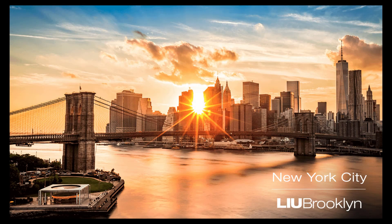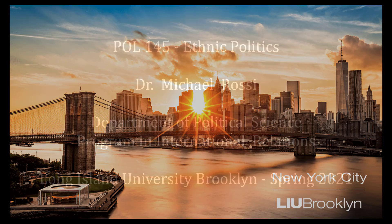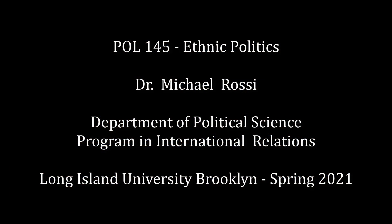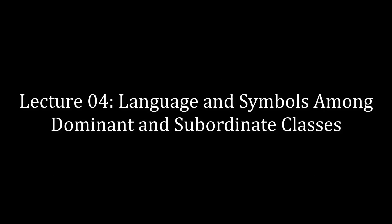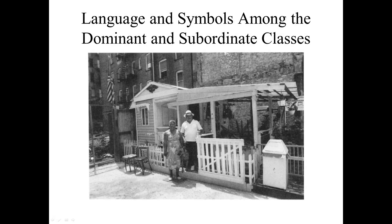Welcome back to Ethnic Politics. This week is only one lecture, but it's a good one. We are looking at the relationship between language and symbols among the dominant and subordinate classes. We'll examine how group identity changes vis-à-vis interaction between in-group and out-group members — specifically when interacting with people perceived to be above or below one's socioeconomic station.